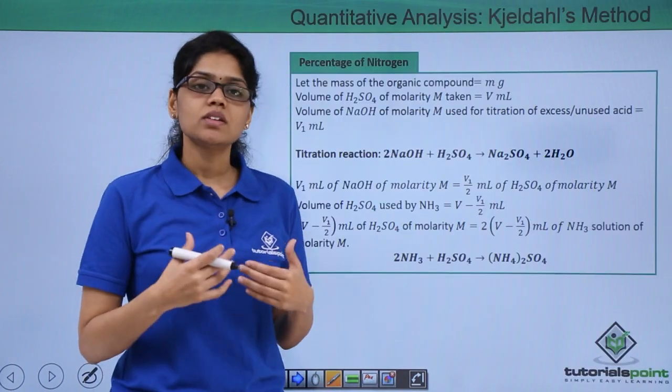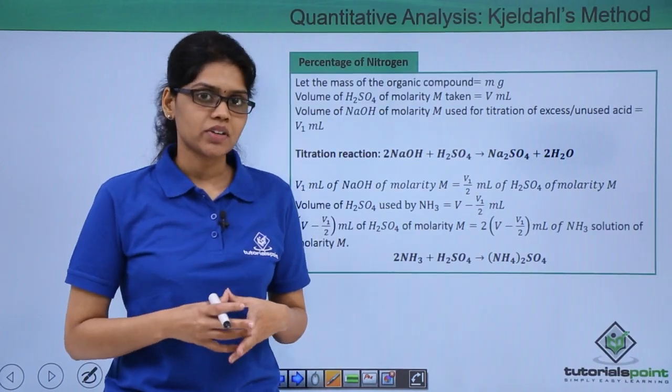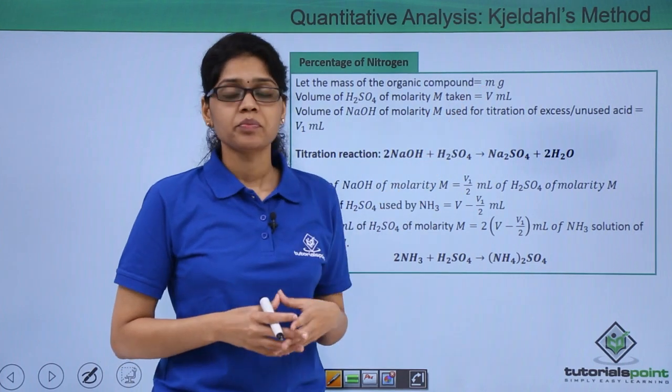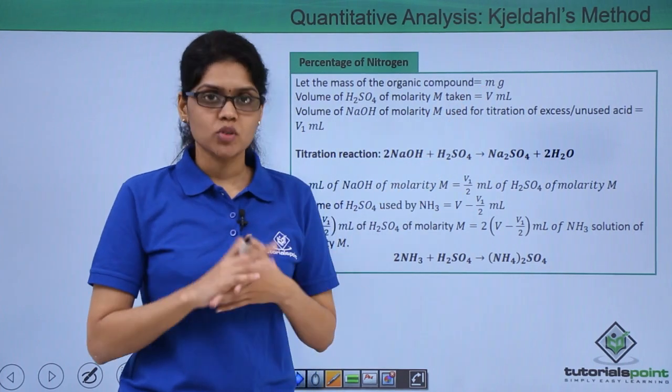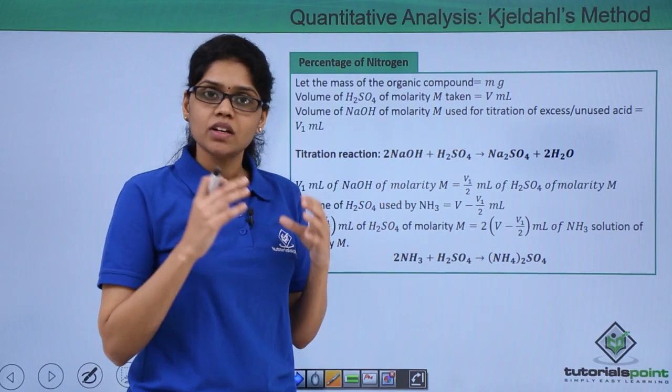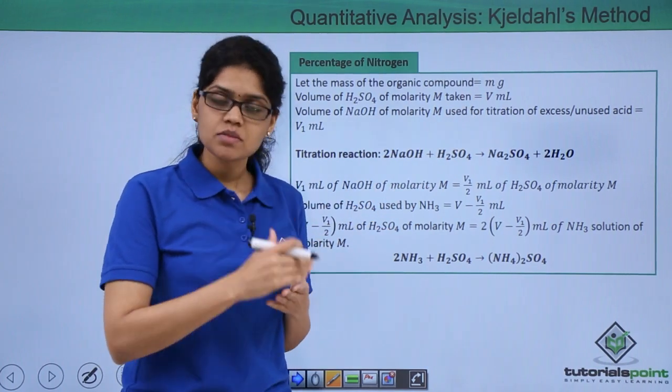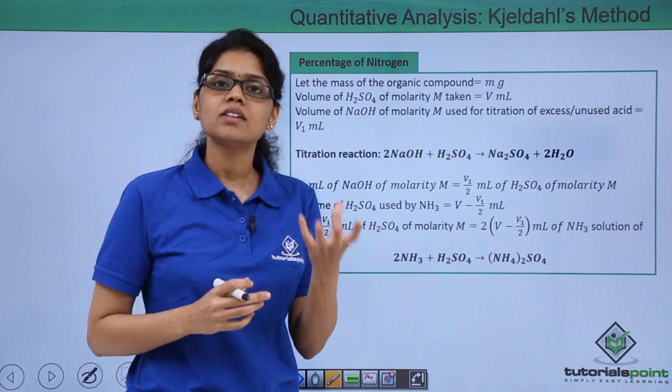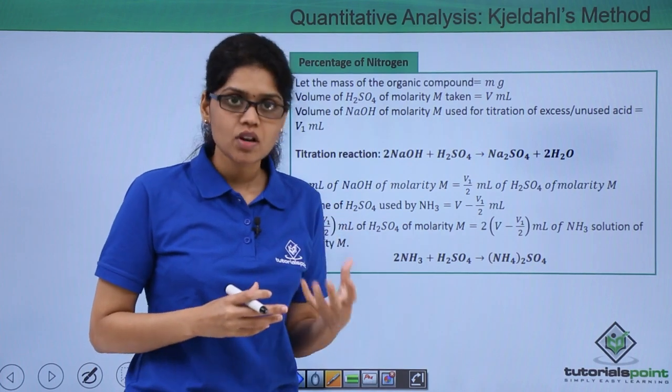Let us assume that the total mass of the organic compound that we are taking is m grams. The total volume of sulfuric acid that we would be taking, let it be V ml. We know that sulfuric acid reacts with ammonia and there would be certain amount of acid that is left or unused.